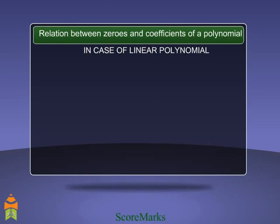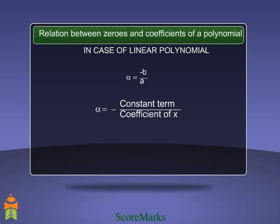In the case of a linear polynomial, the general form is p(x) = ax + b. Its zero is minus b upon a, that is, minus the constant term divided by the coefficient of x.